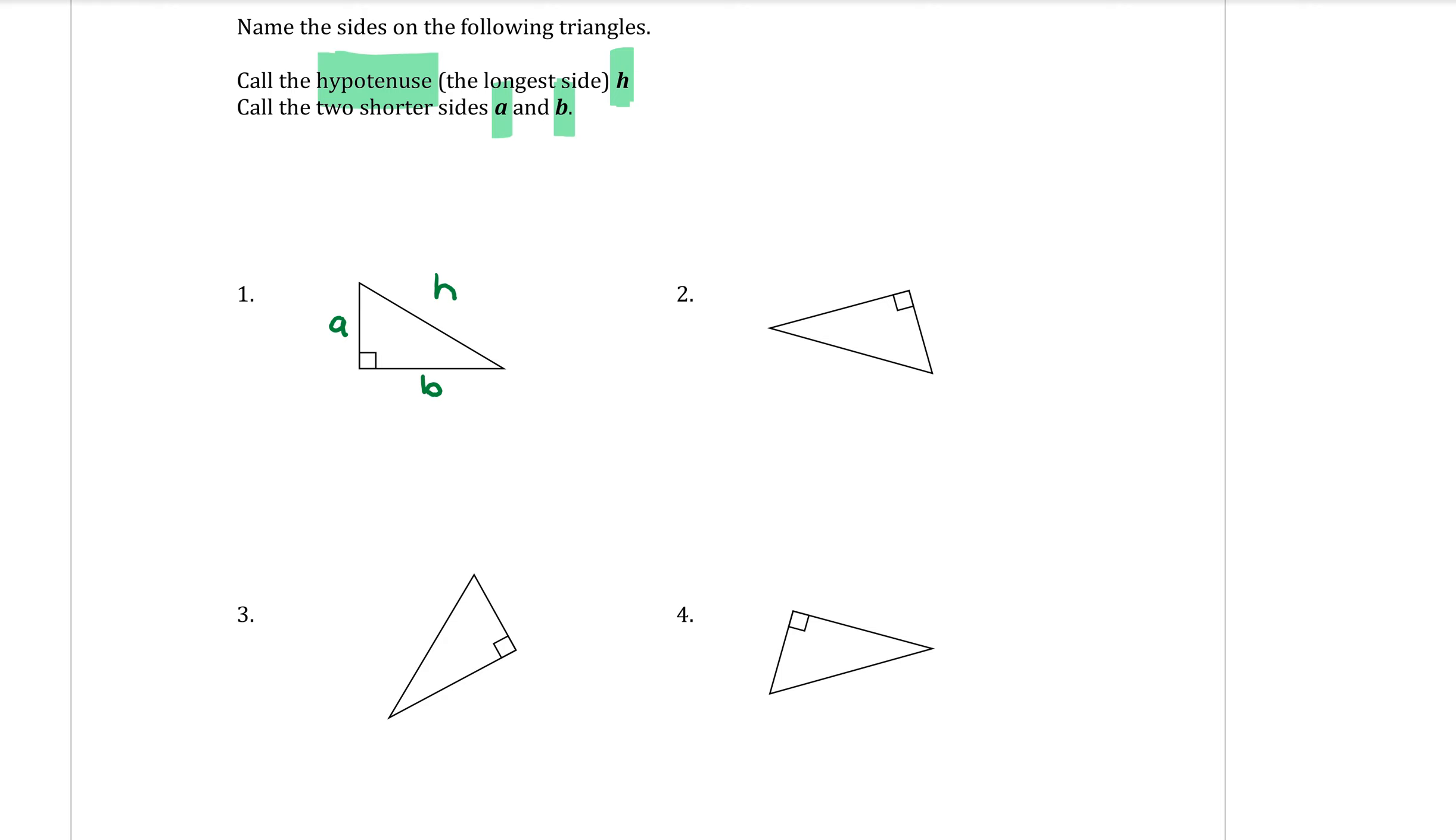So let's try that again for question two. The right angle is here. So the sides on either side we call a and b. And the one straight across from the right angle is the hypotenuse.